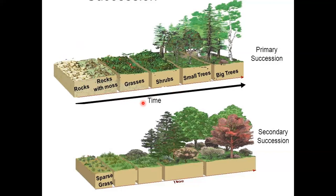Even though time goes this way, sometimes things throw us back. For example, if we get to the small tree phase but a forest fire comes through, it can reset us back down to grasses, and time will have to grow us back up. Primary succession is not the more common of the two, because there aren't many events that take us down to bare rock. Secondary succession is much more common — it means we are starting with some soil, so the timeline is much quicker, sometimes as short as 100 to 150 years, up to about 500 years.